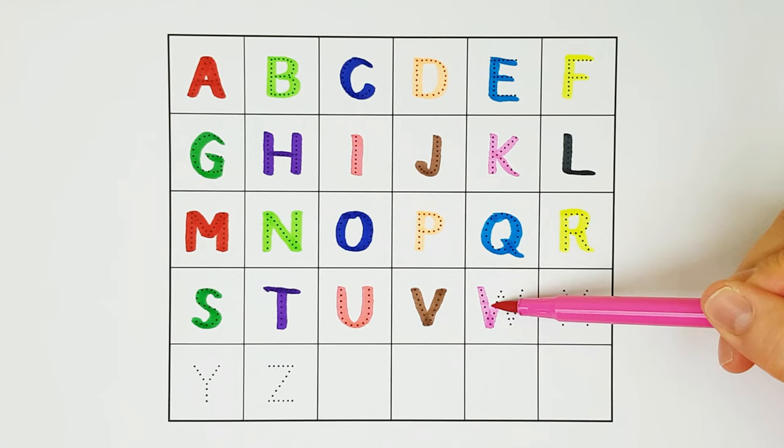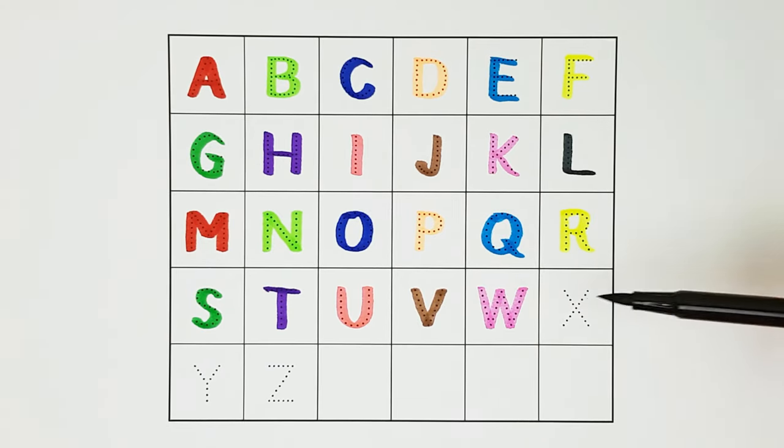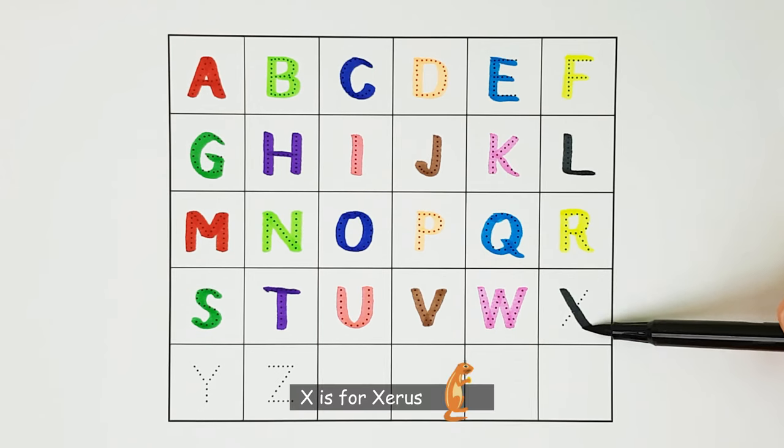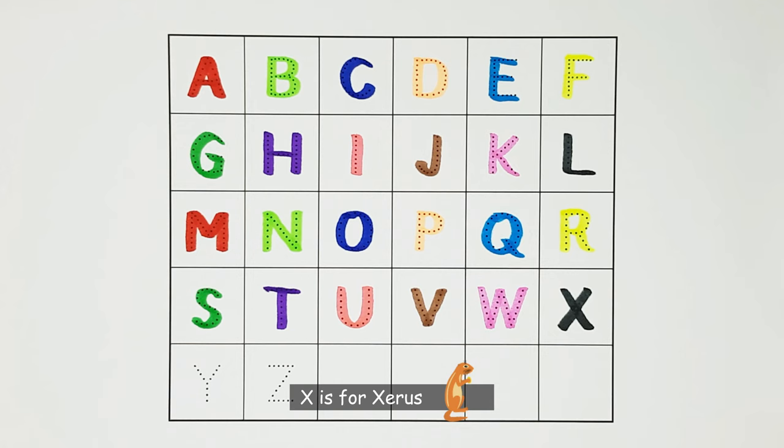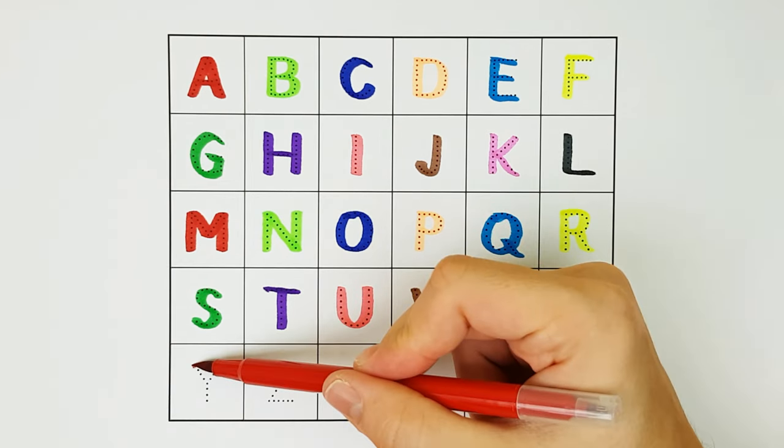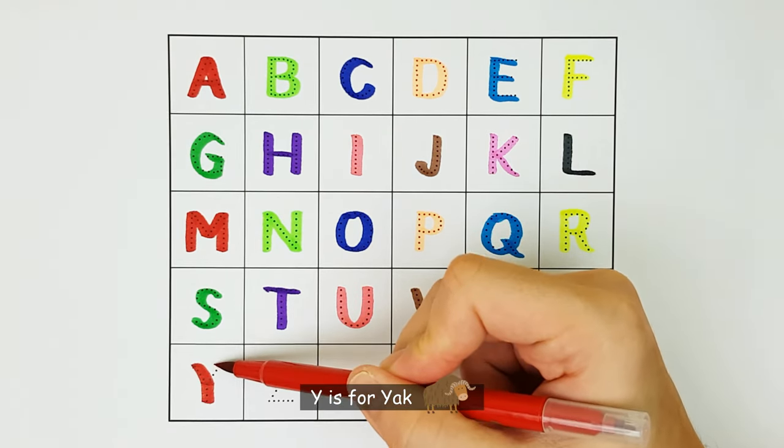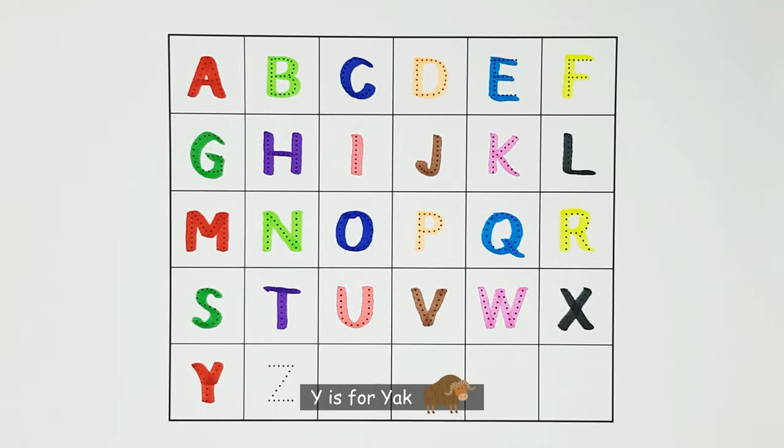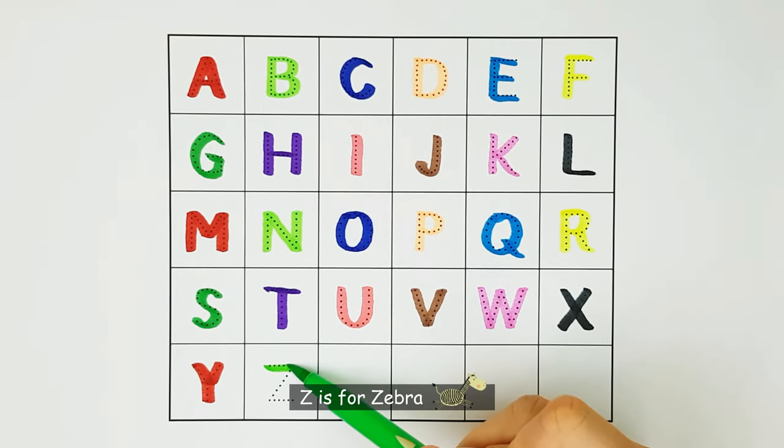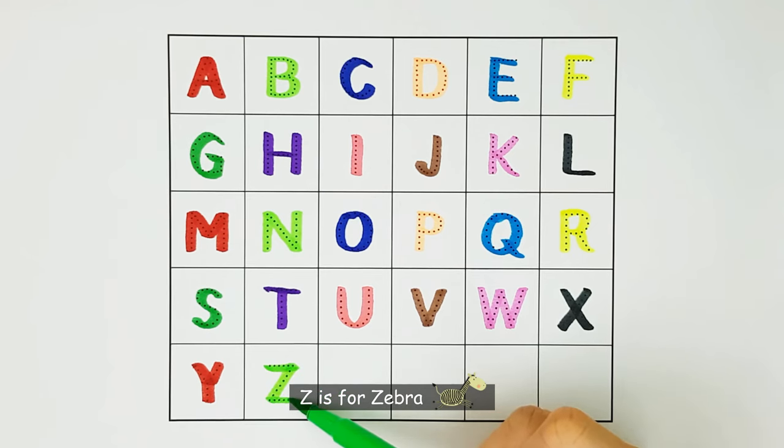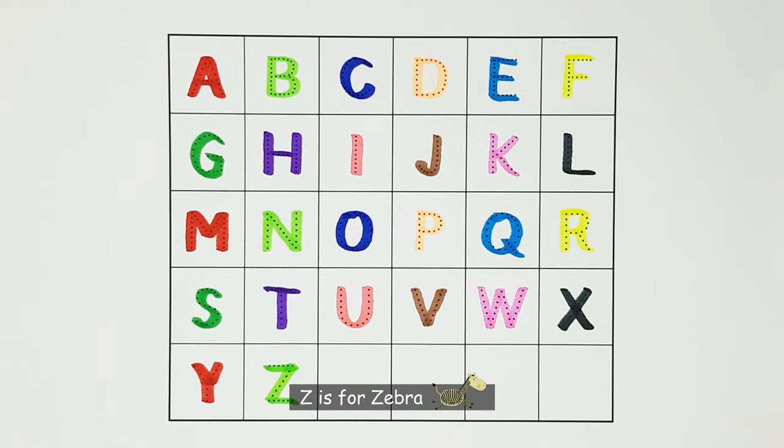W. W is for Wolf. W. X. X is for Xerus. X. Y. Y is for Yak. Y. Z. Z is for Zebra. Z.